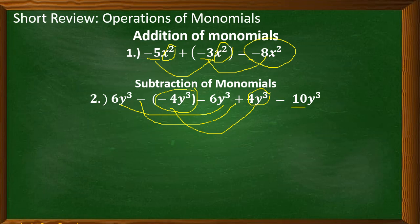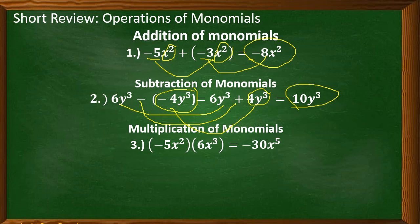For multiplication of monomials, negative 5x squared times 6x cubed. Multiply negative 5 times 6 — the answer is negative 30. Next, copy the variable x and add the exponents: 2 plus 3 equals 5. That is why we have negative 30x to the power of 5.